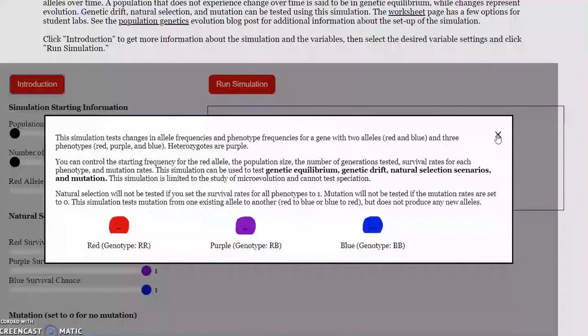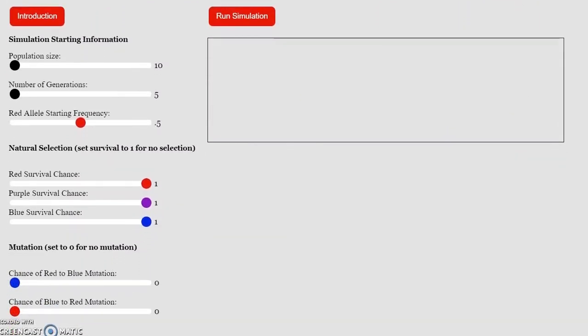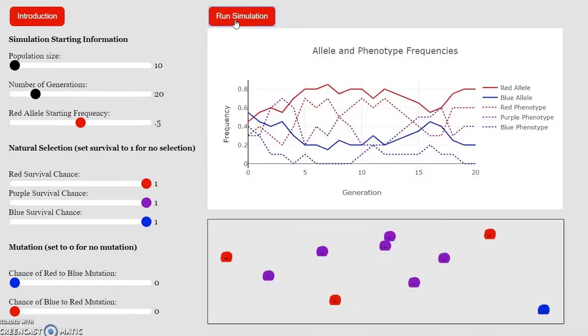We'll close the introduction and take a look at our starting parameters. We are going to leave the red allele starting frequency at 0.5, so we'll have an even split between the two alleles. We are going to leave the population size at 10, and we'll set the number of generations to 20. Then we will come up here to the run simulation button, and we'll click this to get some data.